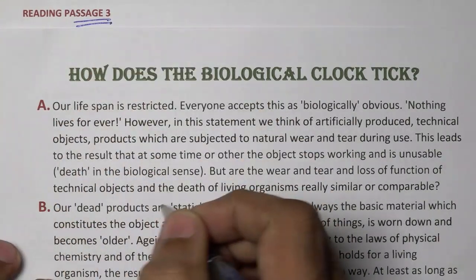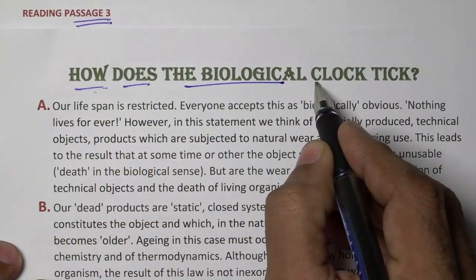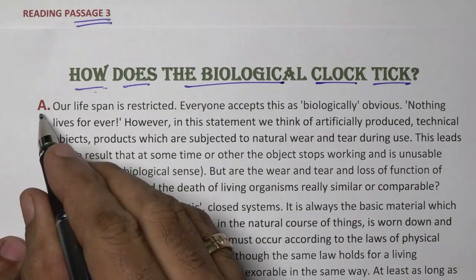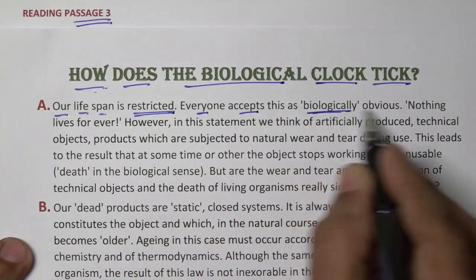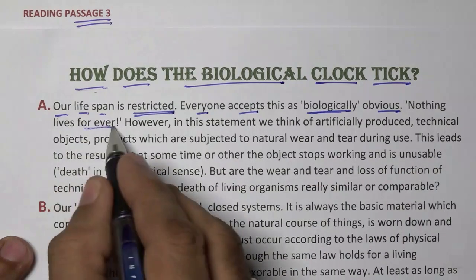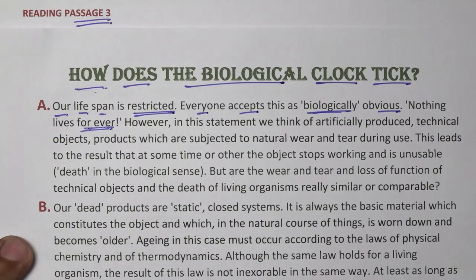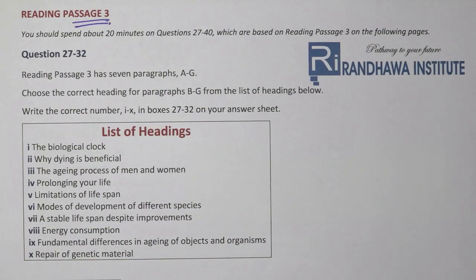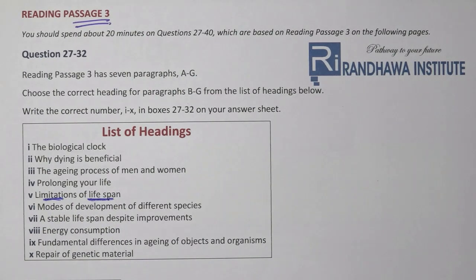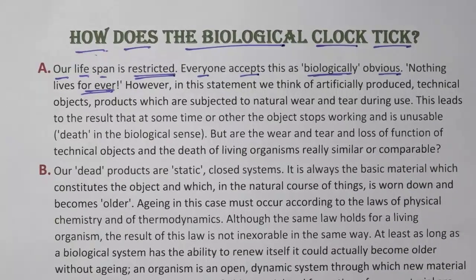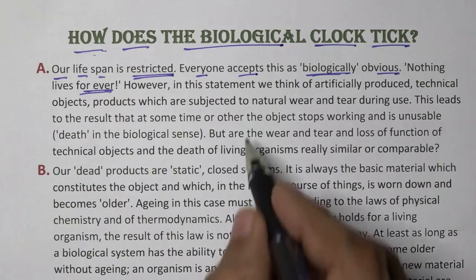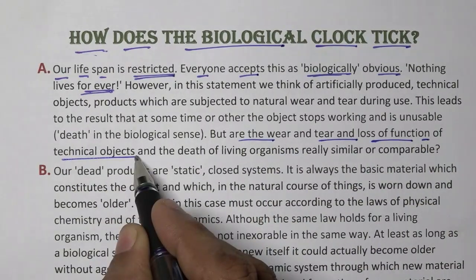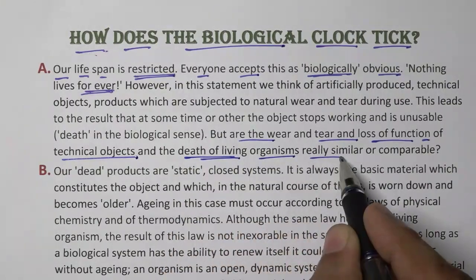Reading passage 3: How does the biological clock tick? Paragraph A: our lifespan is restricted — everyone accepts this as biologically obvious. Nothing lives forever. The limitations of a lifespan result in objects stopping working and becoming unusable — death in the biological sense. But are wear and tear in technical objects and death in living organisms really similar or comparable?